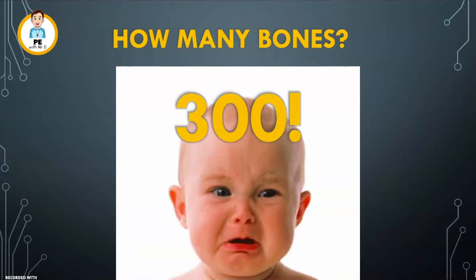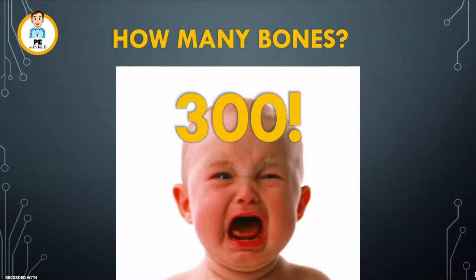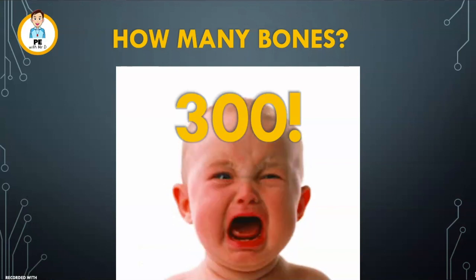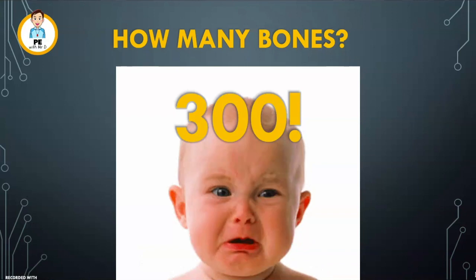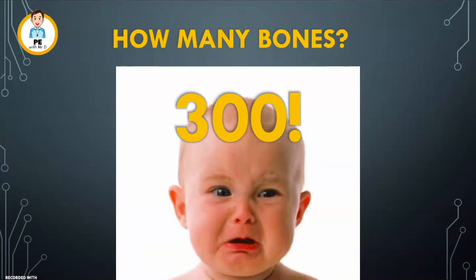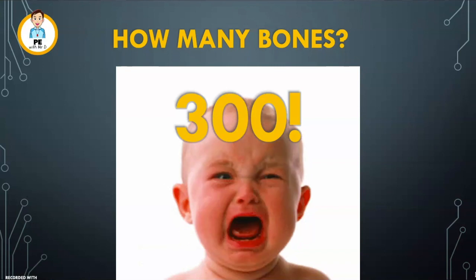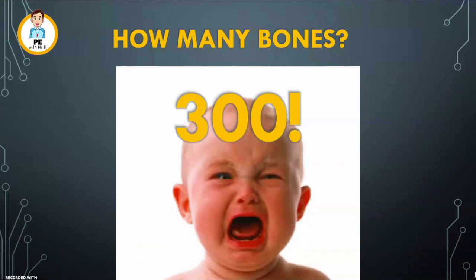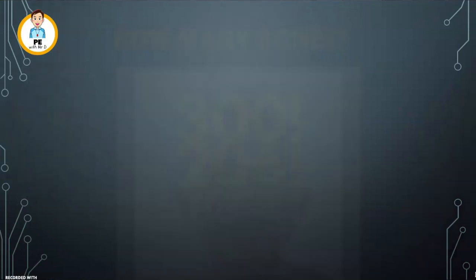As we enter the world, many of the bones in our skull and other parts of the body are in different pieces. And as we grow and develop, these fuse into single bones, bringing the total count down from 300 to 206. Pretty amazing hey? Let's move on.